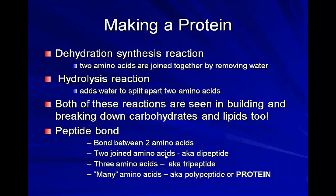How do we make a protein? These types of reactions occur not just with protein synthesis and breakdown, but also in carbohydrate and lipid synthesis and breakdown. There are two major reactions. One is called a dehydration synthesis reaction. When you join two separate amino acids together by connecting the amino group and the carboxylic acid group, you remove a water molecule — two hydrogens and an oxygen. We call this a dehydration synthesis reaction because we're removing water and making something new, producing what we call a dipeptide.